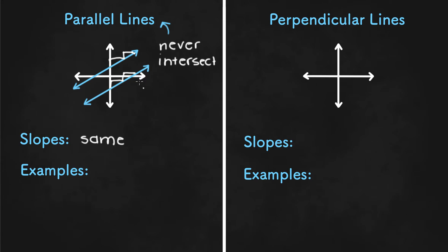So an example of parallel lines in equations would be y equals 2x plus 1 and y equals 2x minus 2. So the slopes are the same right here, but they do have different y-intercepts just like in the graph shown here.